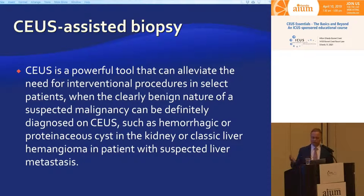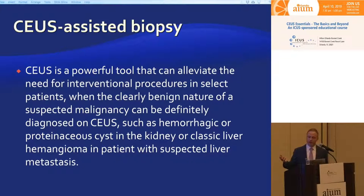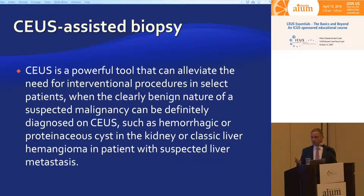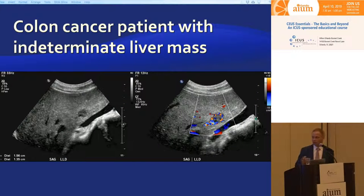Contrast-enhanced ultrasound is a powerful tool that not only helps you do biopsies in complicated, small, or large necrotic lesions, but it can also stop you from doing a biopsy in patients with a definitely benign lesion. If you have a young female presenting with an indeterminate liver mass, you can do contrast-enhanced ultrasound and characterize it as definitely benign — hemangioma, FNH, or adenoma — and stop the biopsy, because liver biopsies in patients with FNH or hemangiomas are risky due to their vascularity.